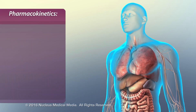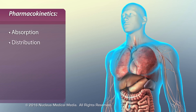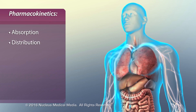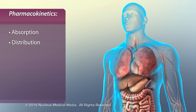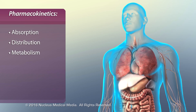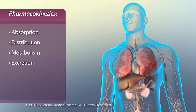Pharmacokinetics is a multi-step process that includes absorption, or the movement of the drug into the bloodstream; distribution, or the movement of the drug through the blood and various tissues of the body, such as brain tissue, fat, and muscle; metabolism, or the chemical alteration of the drug by the body; and excretion, or the elimination of the drug by the body.